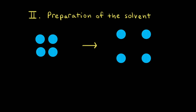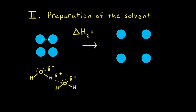Step two is the preparation of the solvent to receive the solute. The solvent particles are held together by intermolecular forces — for water molecules, the most important intermolecular force is hydrogen bonding. The goal of this theoretical second step is to break apart the solvent particles and move them far apart from each other so there's enough room to fit in a solute particle. Since it takes energy to overcome the intermolecular forces holding the solvent particles together, delta H-2 is positive.